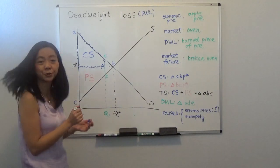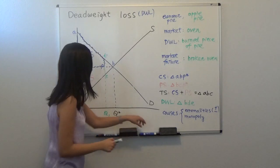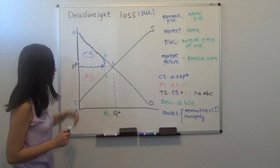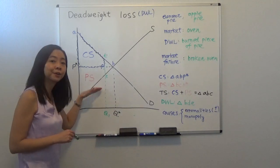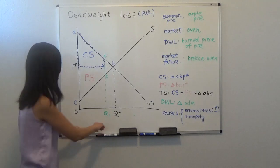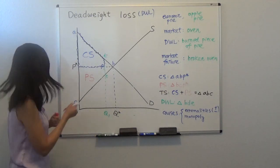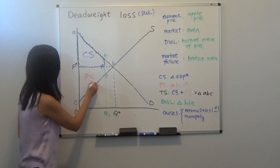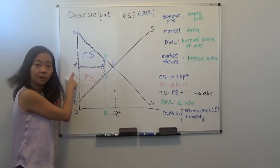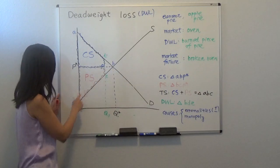What about producer surplus? Producer surplus is the area below the price received by the seller in this case, and above the supply curve. And the base is from zero to Q1. So now your producer surplus is also a trapezoid, is this area. So it would be area P star, F, E, C.